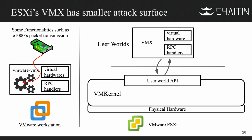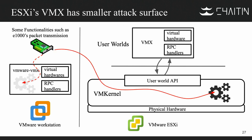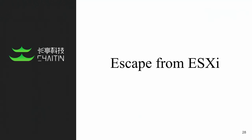We therefore concluded that the VMX attack surface in ESXi is much smaller. Comparing Workstation and ESXi, we can see that quite a few features have been removed from VMX and moved into the VM kernel. For example, network packet transmission has been moved from VMX into the kernel. Many vulnerabilities exist in the packet transmission component of the virtual network card, but those affect Workstation only. So VMX in ESXi has a smaller attack surface.